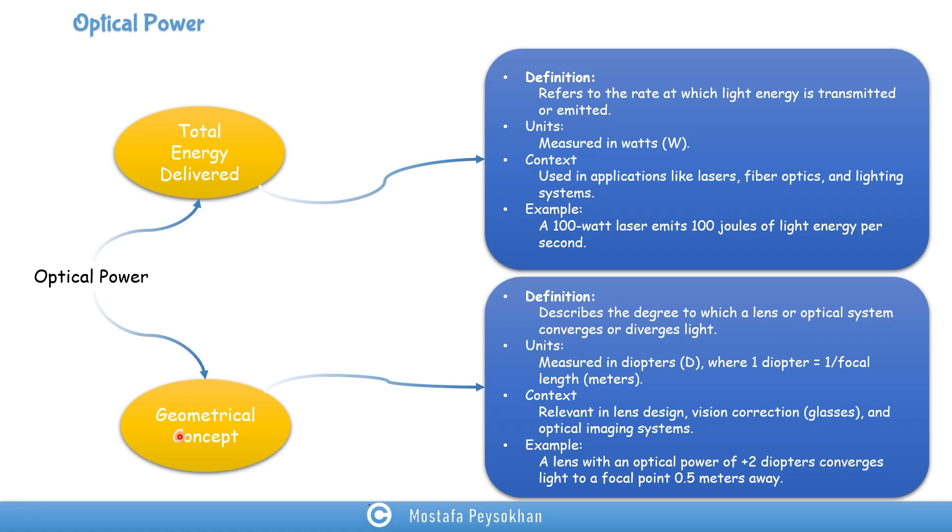Now a geometrical concept, the optical power in geometrical concept describes the power or the degree of a lens or optical system that can converge or diverge light. When it is positive, it's converging. When it is negative, it's diverging.